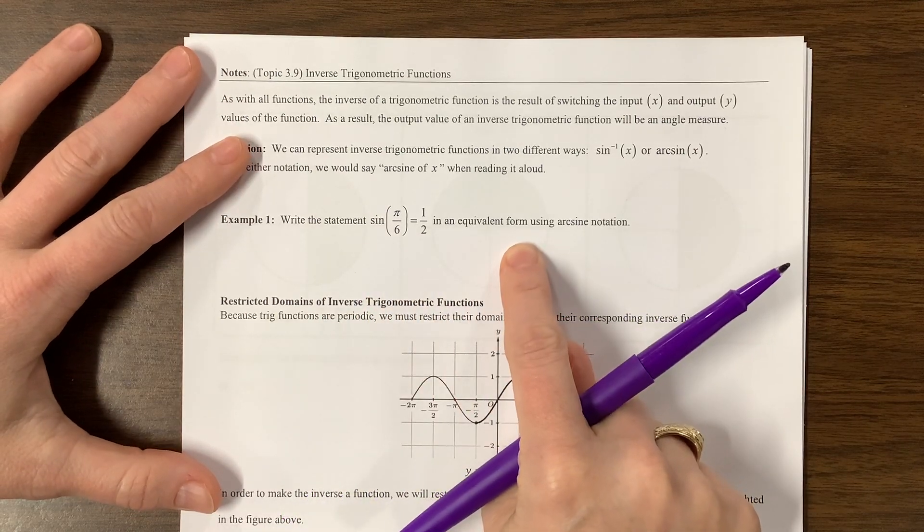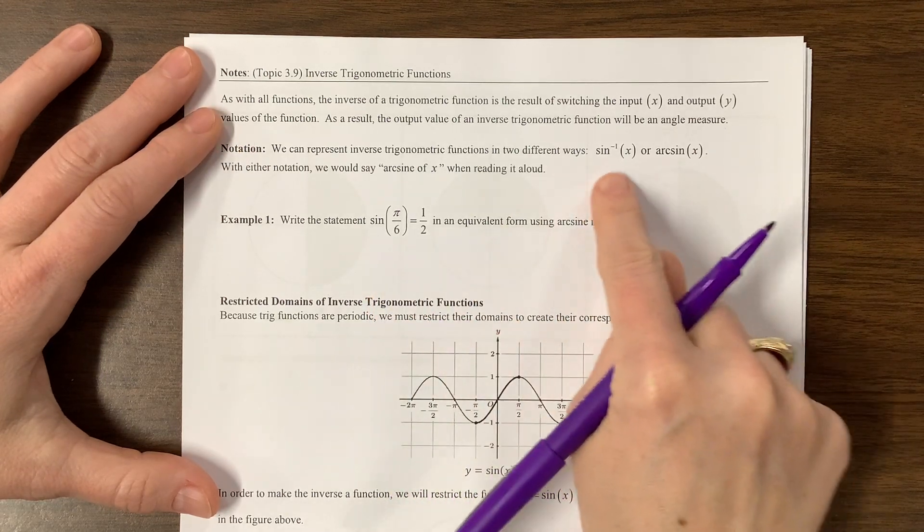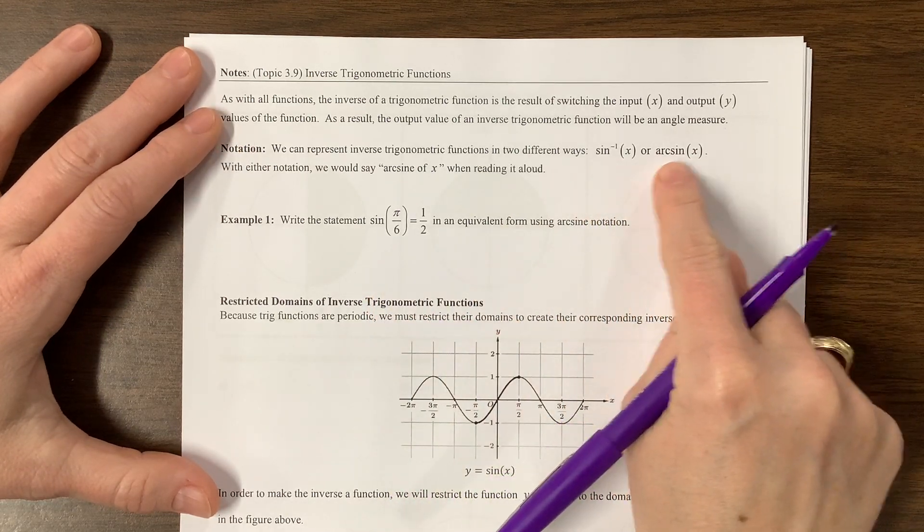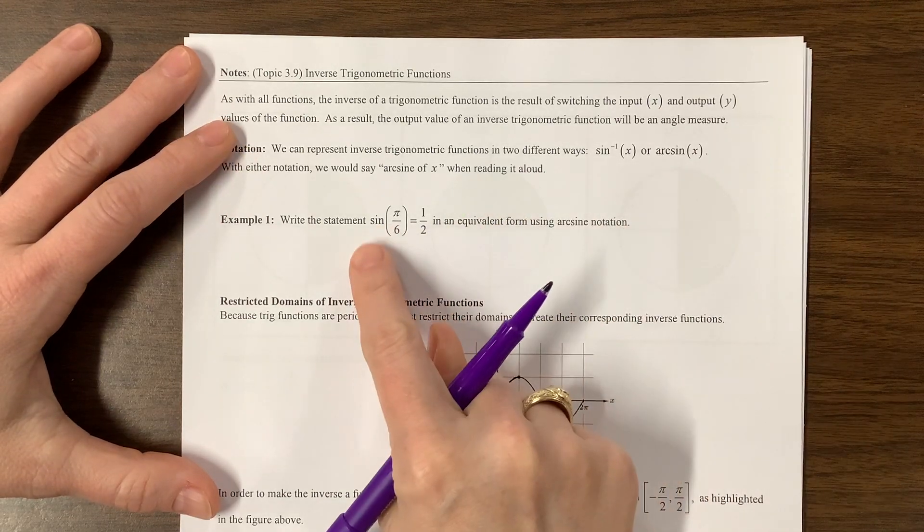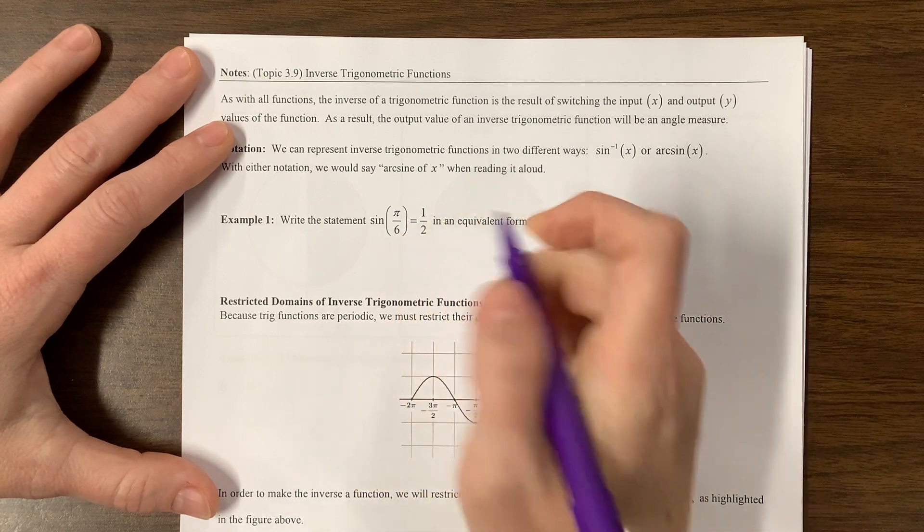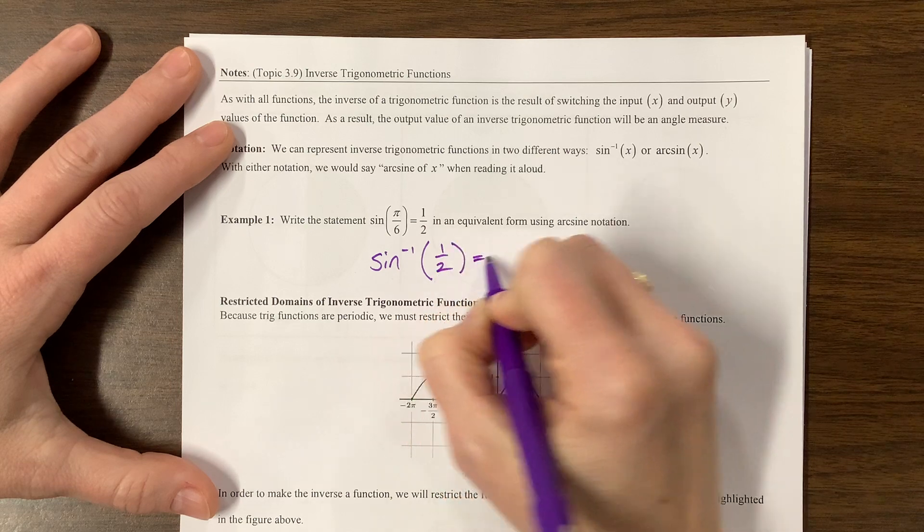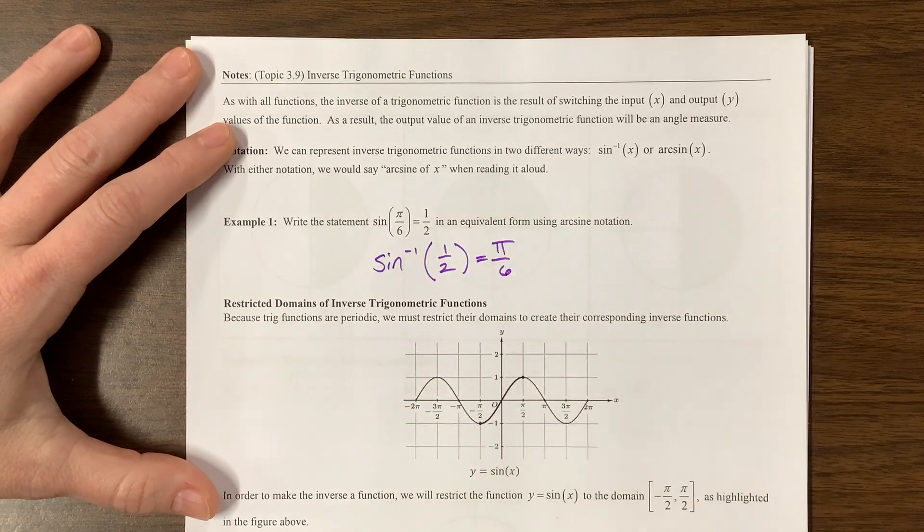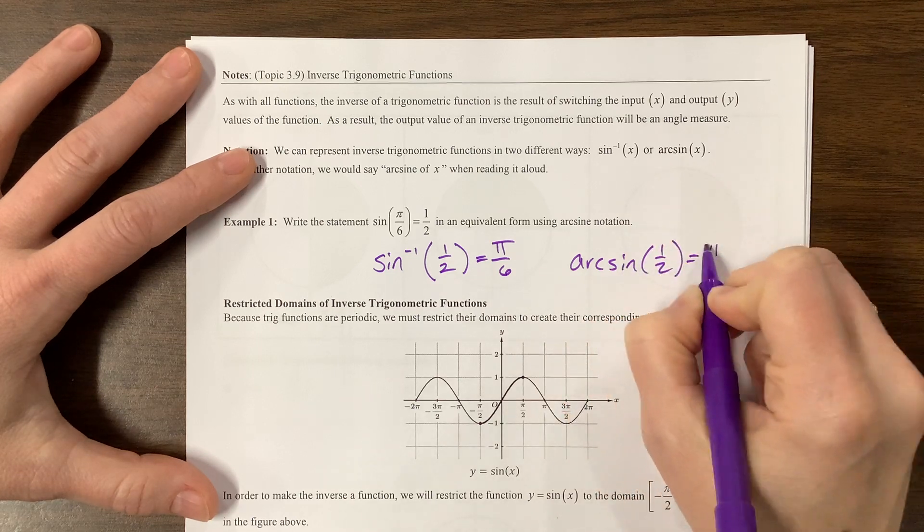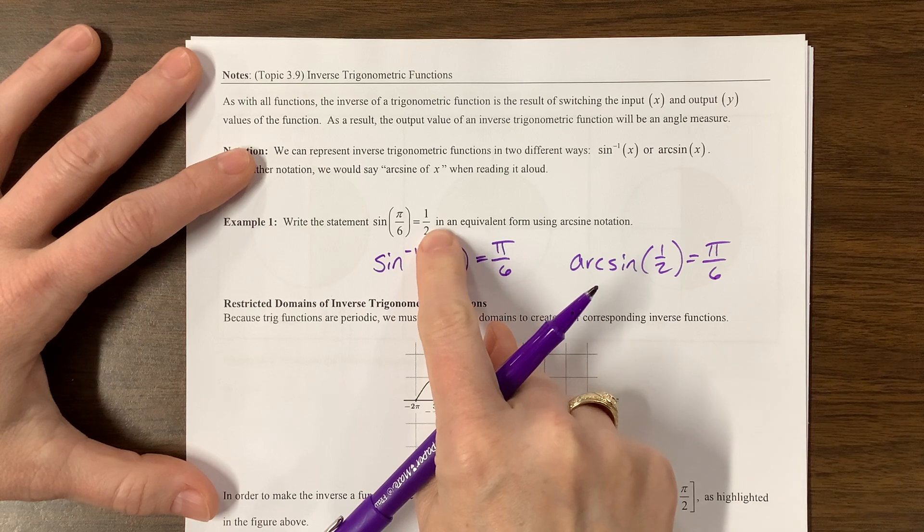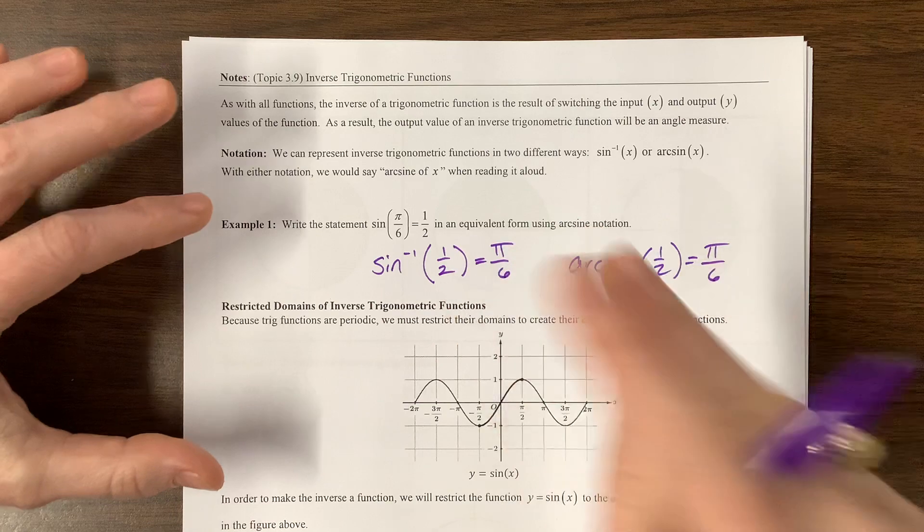Write the statement in the equivalent form using arcsine notation. So basically what arcsine is doing is it's saying arcsine of a ratio equals an angle. When you have sine of an angle equals a ratio, then I can say arcsine or sine to the negative one of the ratio would equal that particular angle. Or you could say arcsine of one-half equals pi over six. So it's sine of an angle equals a ratio, and likewise, it's arcsine of a ratio equals an angle. They are inverse operations of each other.